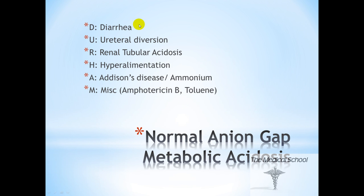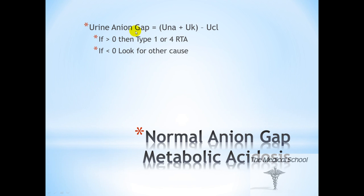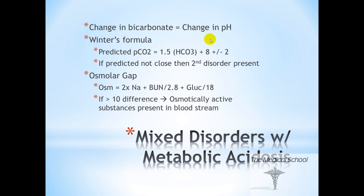Now let's talk about normal anion gap metabolic acidosis. This is described by the mnemonic DURHAM, representing: diarrhea, ureteral diversion, renal tubular acidosis, hyperalimentation or overeating, Addison's disease or ammonium, and miscellaneous including amphotericin B and toluene. To tease out the cause, we use the urine anion gap: urine sodium plus urine potassium, minus urine chloride. If it is greater than 0, then you have a type 1 or type 4 RTA. If it is less than 0, look for another DURHAM cause, such as GI losses.